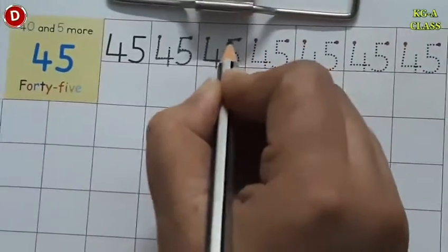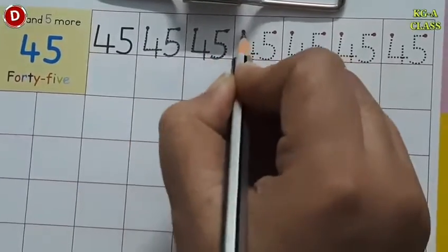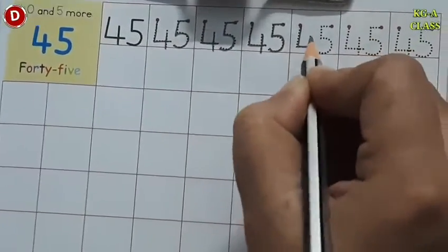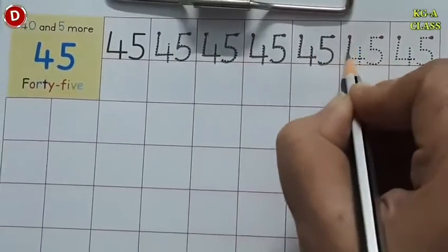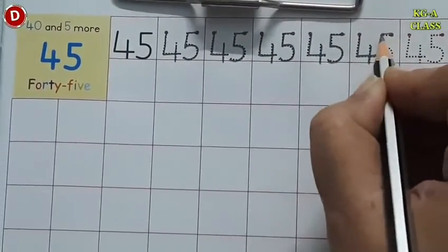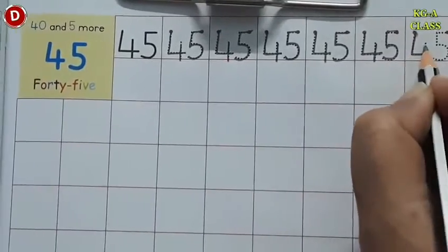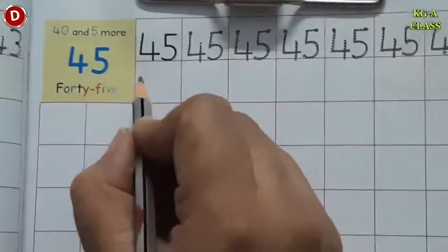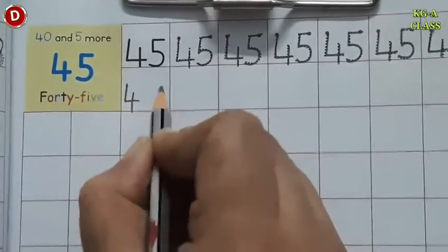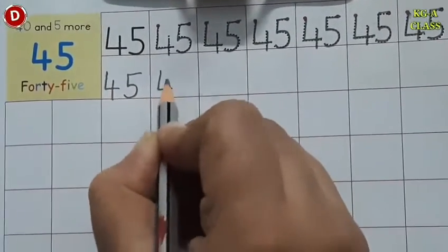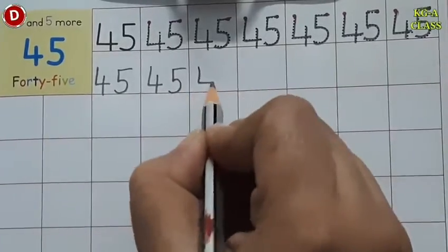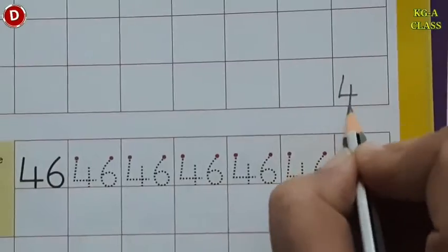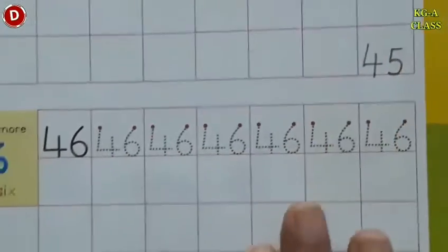45. Look here, like this. And then children, from here you have to write on your own like this. 4, 5, 45. And in this way, children, you have to finish all these blocks. You have to write in all these blocks like this till here. 45.